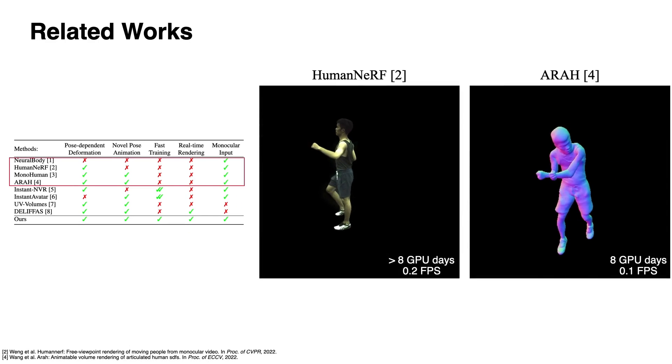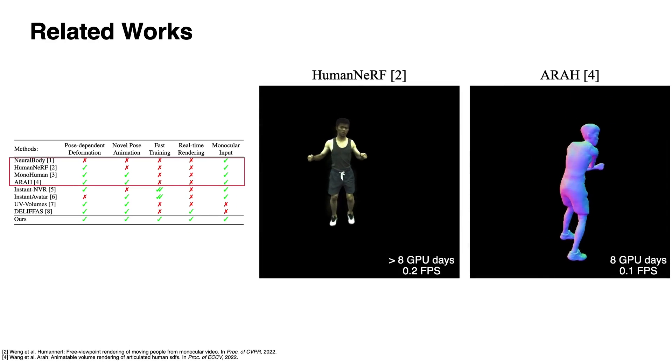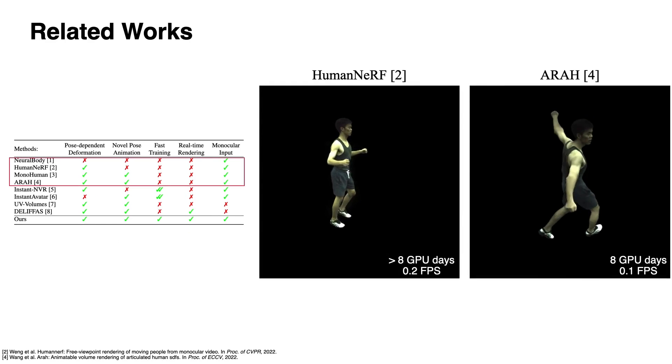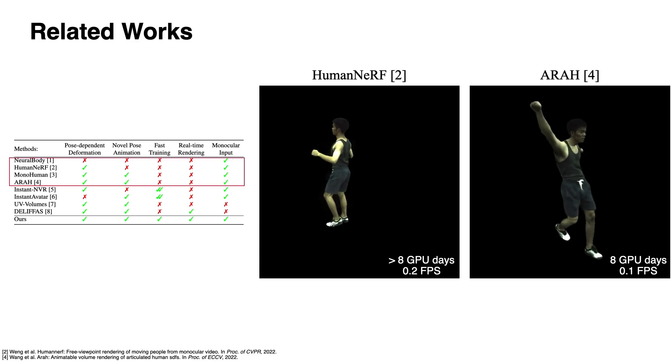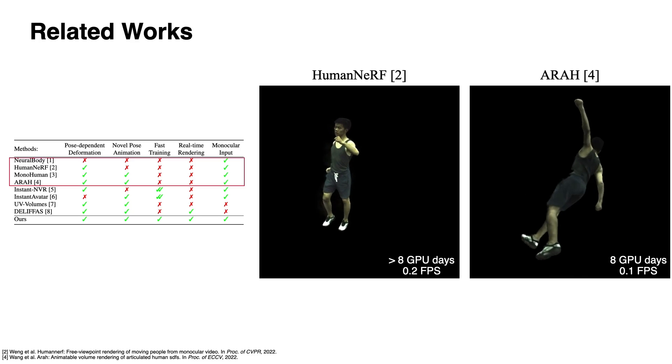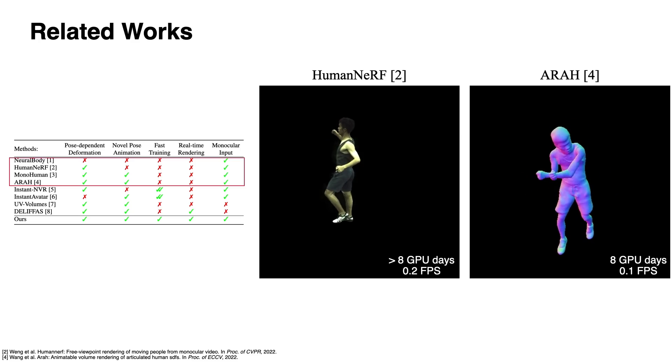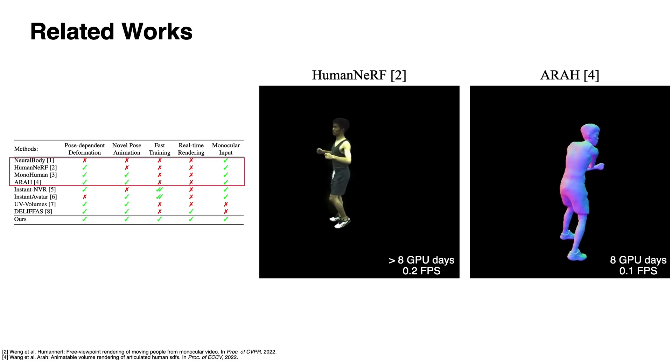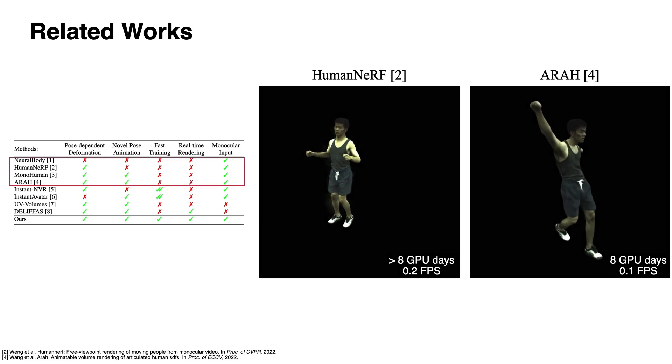Human NeRF and ARAH propose to learn articulated NeRFs, producing state-of-the-art rendering quality. However, they typically require days for training and are slow at inference. In contrast, we achieve comparable or even better results while being two orders of magnitude faster for both training and inference.